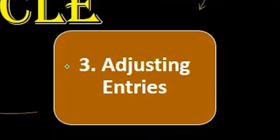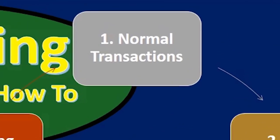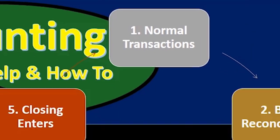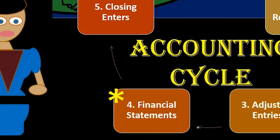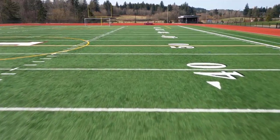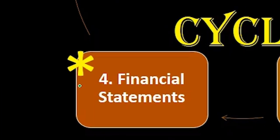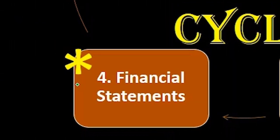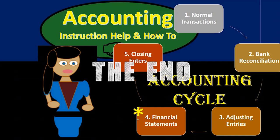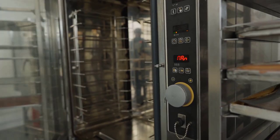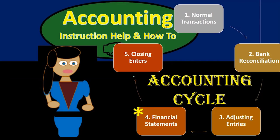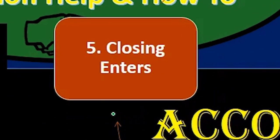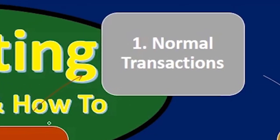All of this happens at the end of the time period, as opposed to the normal transactions which happen for most of the period. Once the adjusting entries are done, we can finally make the financial statements — this is the end goal, marked with an asterisk because it's the end product we're really looking for. But notice it's step four of five — it's not the end, although it's the main event. We still have the closing process to get us ready for the whole system to start again.